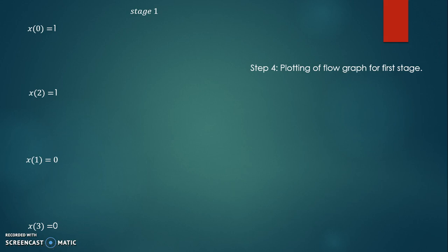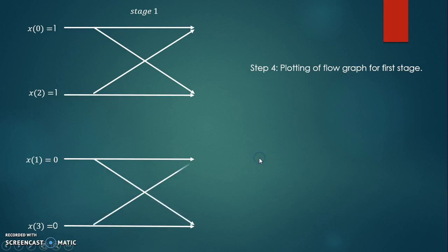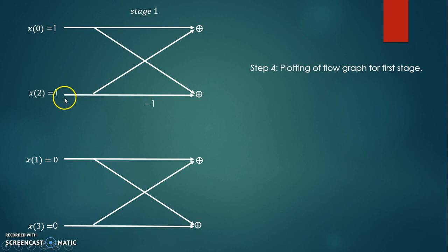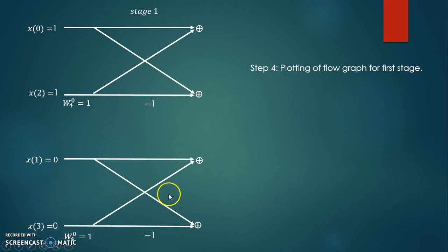Now we plot the flow graph for the first stage. We draw the butterfly structure with these two points as summing points. We apply minus 1 at the bottom line of each butterfly structure. Similarly for the second butterfly, we apply another minus 1 term, and we apply the first twiddle factor W4^0 on the bottom line of each butterfly structure.